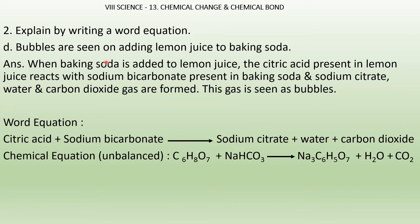Bubbles are seen on adding lemon juice to baking soda. The citric acid in lemon juice reacts with sodium bicarbonate in baking soda to form sodium citrate, water, and carbon dioxide gas — the bubbles are of CO2. Word equation: citric acid + sodium bicarbonate → sodium citrate + water + carbon dioxide. Unbalanced: C6H8O7 + NaHCO3 → Na3C6H5O7 + H2O + CO2.